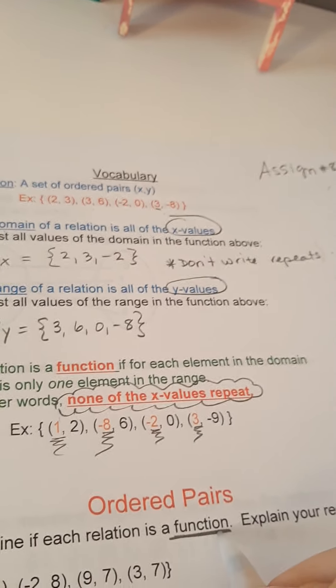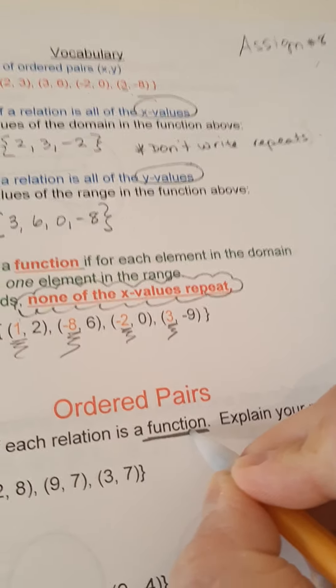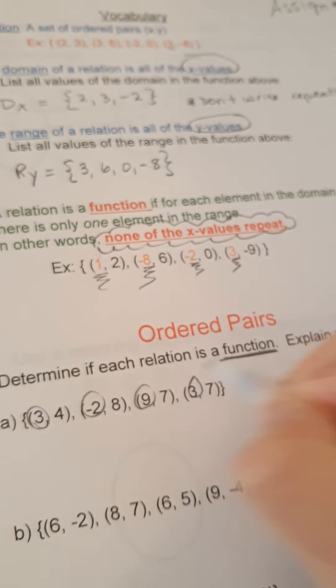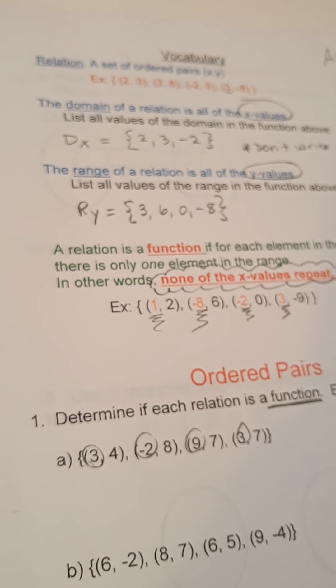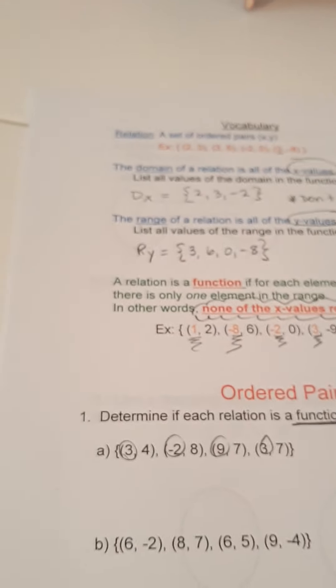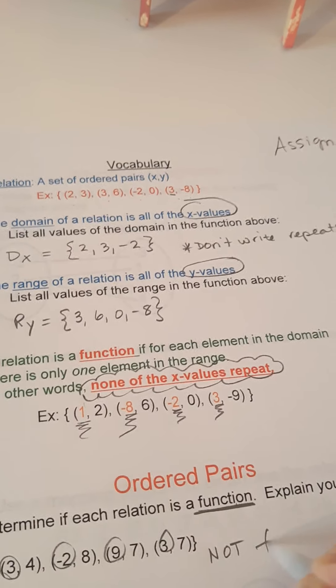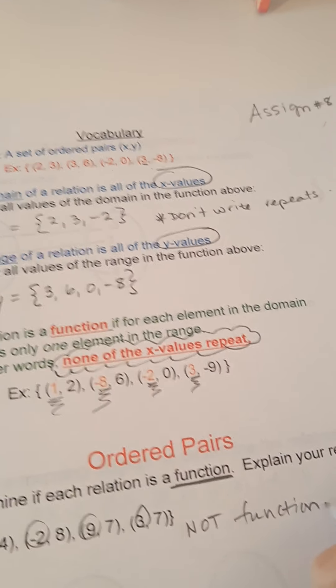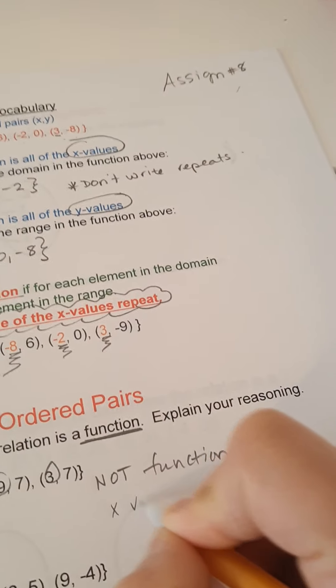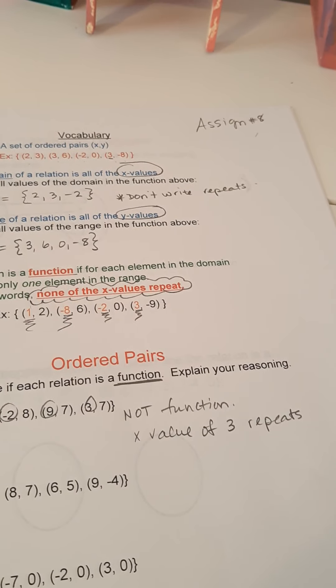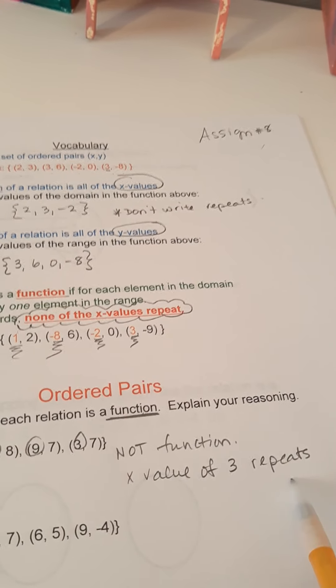If it's a function, we don't want x to repeat. So seriously, that's all I look at. Check it out. There's a 3 in each. Again, the number 3. So this is not a function. I'm going to say the x value of 3 repeats. It says explain your reasoning, so we have to give a statement.